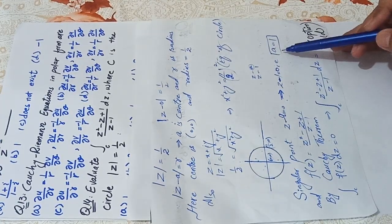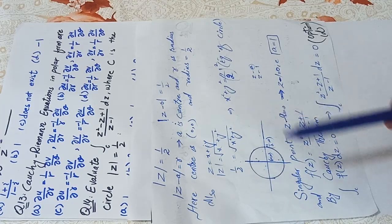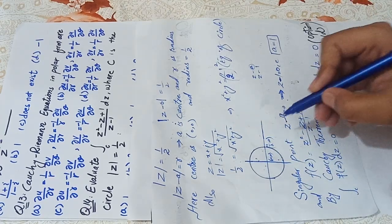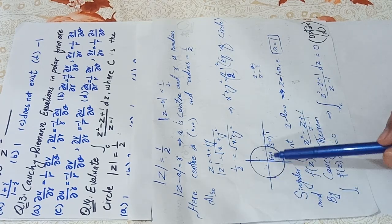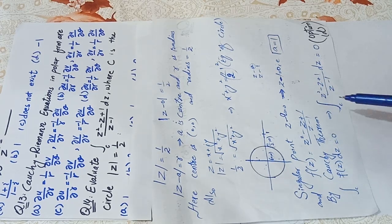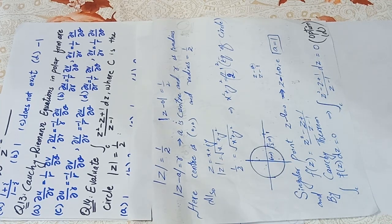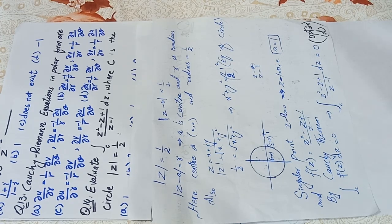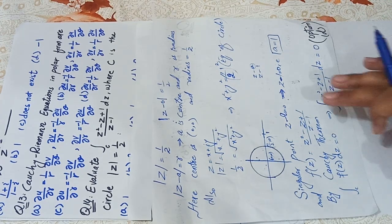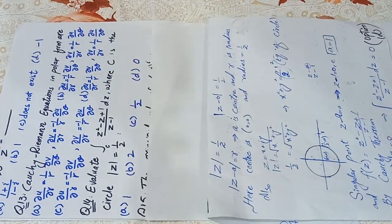We must check whether the singular point lies inside, on, or outside the circle. The radius is 1/2, so the point Z = 1 is clearly outside the circle. By Cauchy's theorem, if the singular point is outside the circle, then the integral of the given function along the circle equals 0. So the integral of (Z² − Z + 1)/(Z − 1) = 0. The correct option is D.